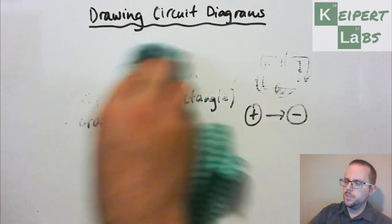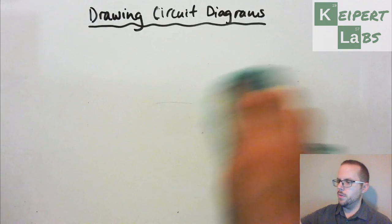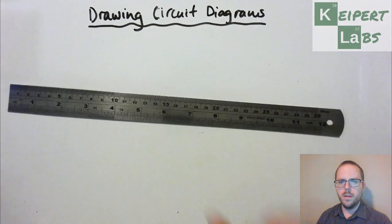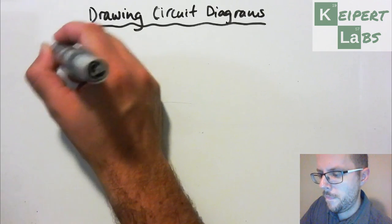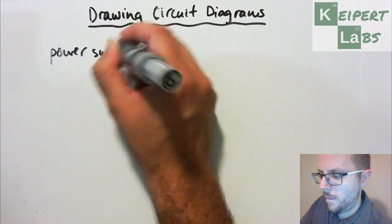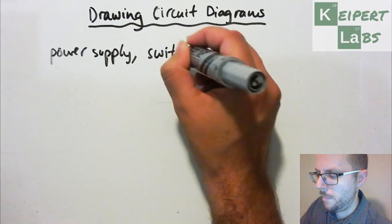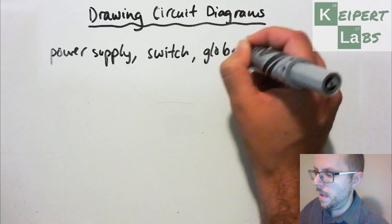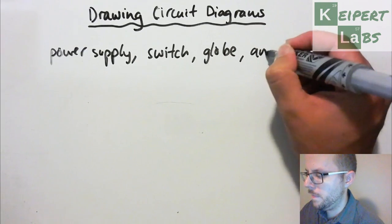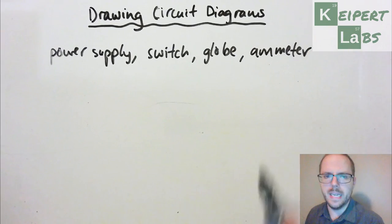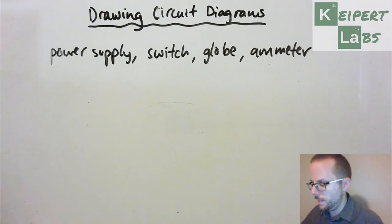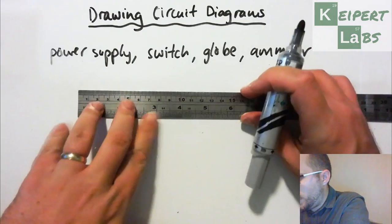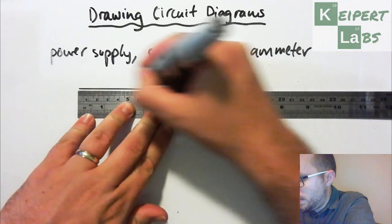Just going to do one quick example to show you and for you to copy into your books as you're watching. And I have my ruler so you can practice what I preach. So what we're going to have is we're going to have a circuit that's got a power supply, it's going to have a switch, it's going to have a globe, and it's going to have an ammeter to measure the flow of electricity through my circuit. And it's going to go in that particular direction. So what I'm going to do, I'm going to actually draw up a rectangle to start with.